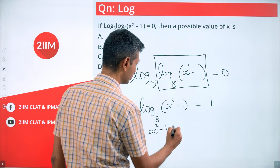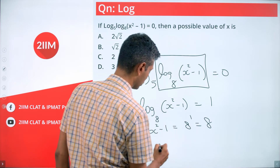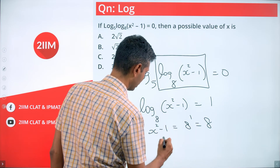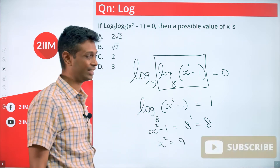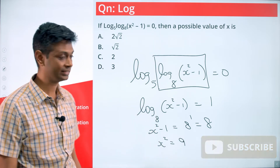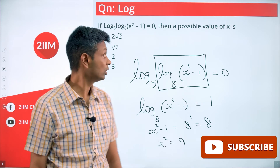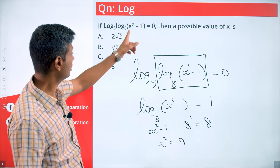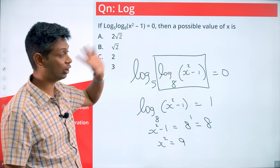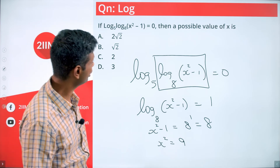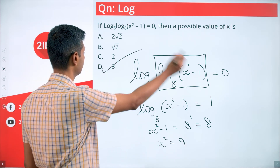So x² - 1 = 8, meaning x² = 9, and x = ±3. Verifying: 9 - 1 = 8, and log 8 to the base 8 is 1, and log 1 to the base 5 is 0. So both x = 3 and x = -3 work. A possible value of x is 3.